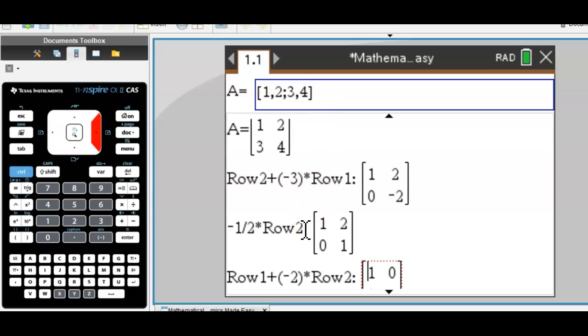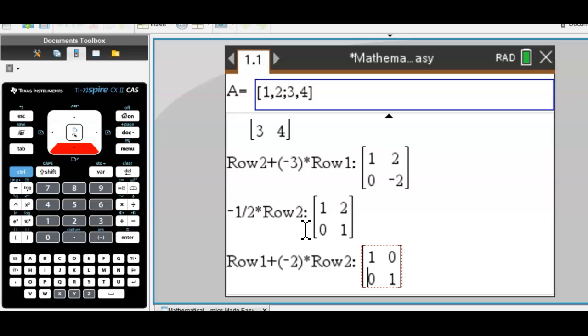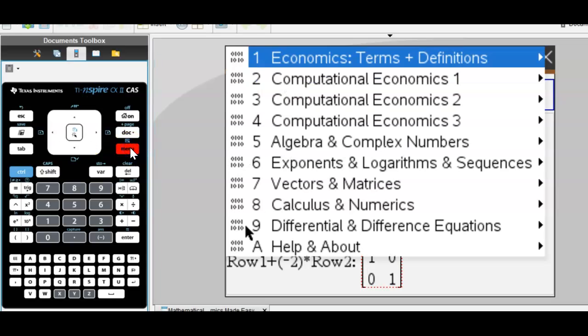until you arrive at 1, 0, 0, 1, the identity matrix. And step by step, all of this, of course.